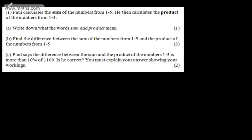This one wouldn't necessarily be on an exam, but it's going to give us some good ideas on how to structure these questions. So it's question number one. Paul calculates the sum of the numbers from one to five. He then calculates the product of the numbers from one to five.